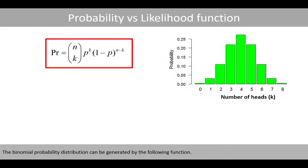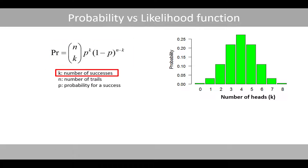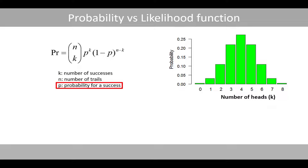The binomial probability distribution can be generated by the following function, where k is the number of successes — or the number of heads in our case — n is the number of trials, and p is the probability for a success.